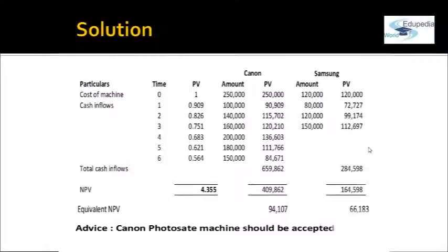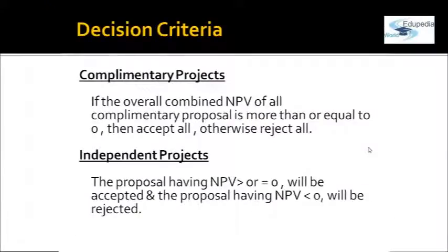This was an example of a mutually exclusive decision. For complementary projects — where acceptance of one project means acceptance of all others, and rejection of one means rejection of all — using the NPV technique, you accept the set only when NPV is greater than or equal to zero, implying cash inflows exceed cash outflows. If NPV is less than zero, all proposals are rejected.